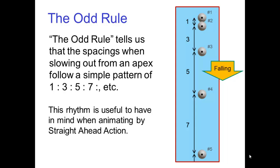Another video described the odd rule, which says that the spacings when slowing out from an apex follow a simple pattern of 1-3-5-7. This rhythm is useful to have in mind when animating by straight-ahead action.